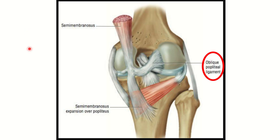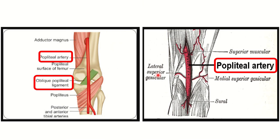Here we can see the tendon of semimembranosus, the popliteus, and the semimembranosus expansion over the popliteus. This is an important ligament — the oblique popliteal ligament — which lies posterior to the posterior cruciate ligament. In this picture it is clear: the oblique popliteal ligament lies anterior to the popliteal artery, which is also very close to the bones.